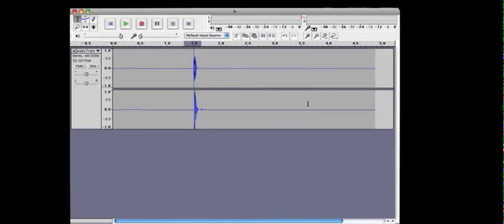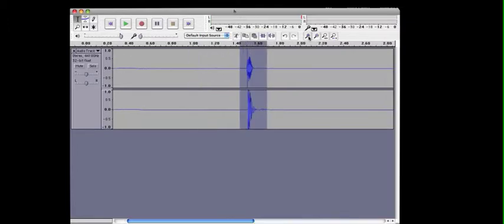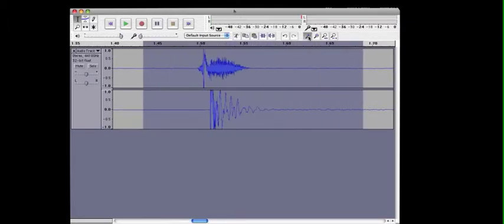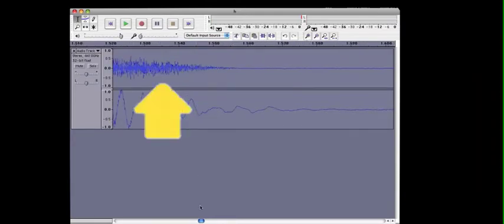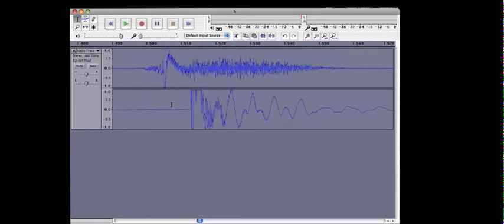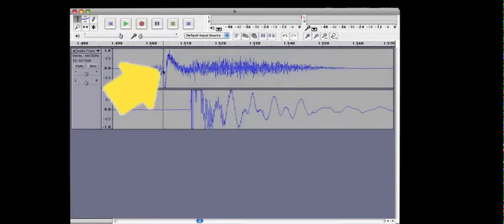Now go onto your computer and open up Audacity. Once Audacity is open, select the area where the audio spikes and press zoom in. The top audio track is the left channel, the bottom audio track is the right channel.